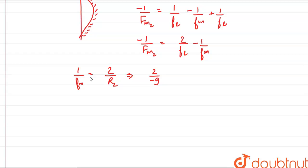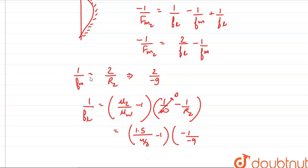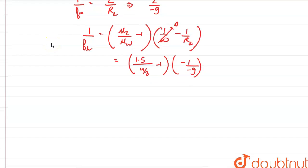Using the lens maker's formula again: 1/f_lens = (μ2/μ_water − 1) × (1/∞ − 1/R2). The plane side contributes 0, so we have (1.5 ÷ (4/3) − 1) × (1/(−(−9))). Solving this, we get f_lens = 72 cm.